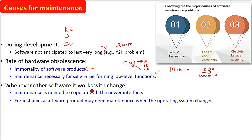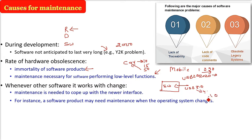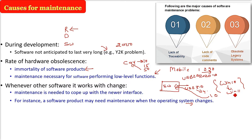Whenever other software that your product works with changes, your software needs maintenance too. For example, when your software is delivered and it should work with USB 2.0, and then USB 3.0, USB 4, and USB 10 come with speeds of 10 Gbps or 100 Gbps, it is your liability to change the software to work with this new USB. Similarly, if software was working on Windows 10 but not on Windows 11, the software product may need maintenance when the operating system changes.